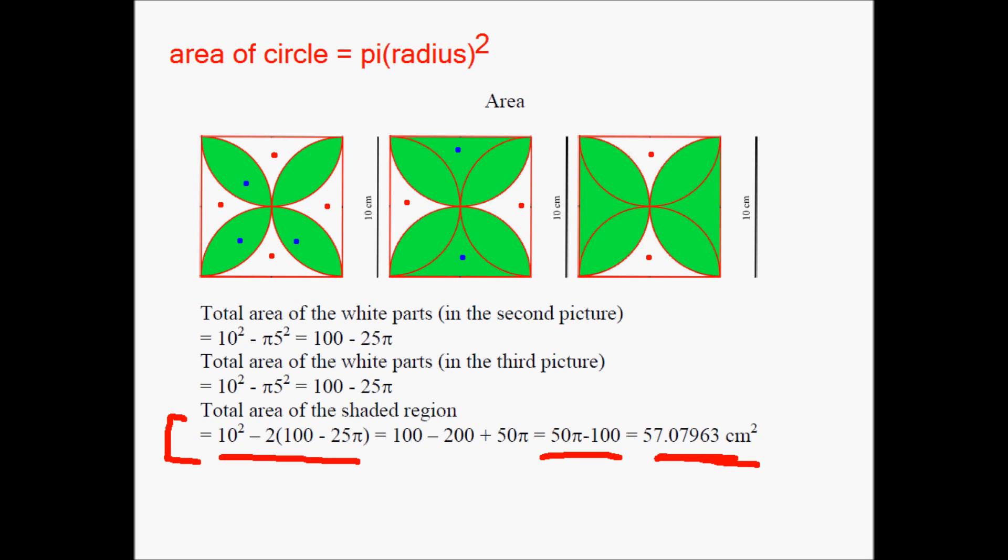This plus this plus this plus this is about 57.07963 square centimeters.